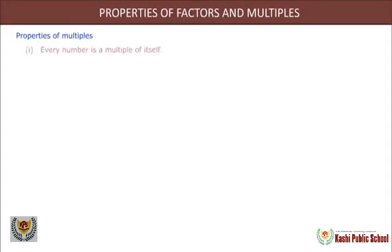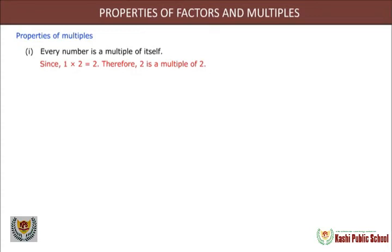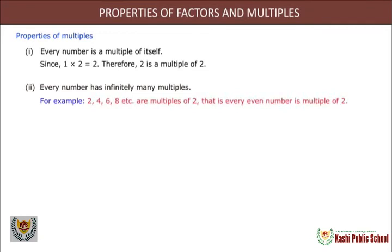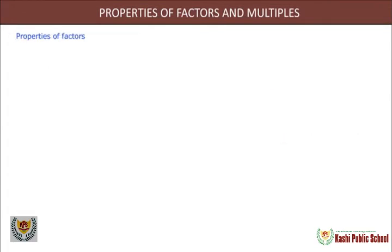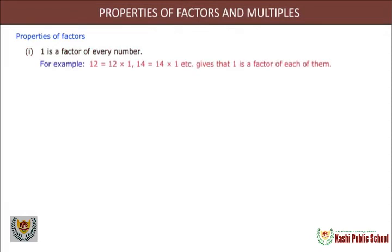Properties of multiples: every number is a multiple of itself, since 1×2=2, therefore 2 is a multiple of 2. Every number has infinitely many multiples — for example, 2, 4, 6, 8, etc. are multiples of 2, meaning every even number is a multiple of 2. Every multiple of a number is greater than or equal to that number — for example, 3, 6, 9, 12, etc. are multiples of 3 and each is greater than or equal to 3.